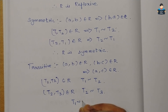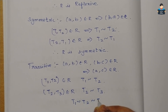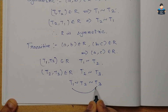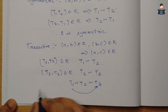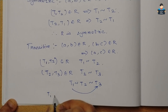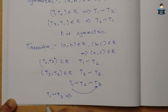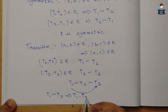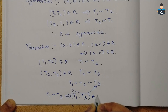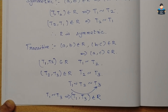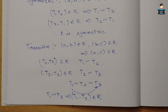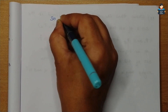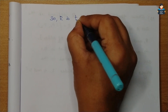For transitivity: if T1 is similar to T2 and T2 is similar to T3, then T1 is similar to T3. Therefore (T1, T3) belongs to R. So R is transitive.